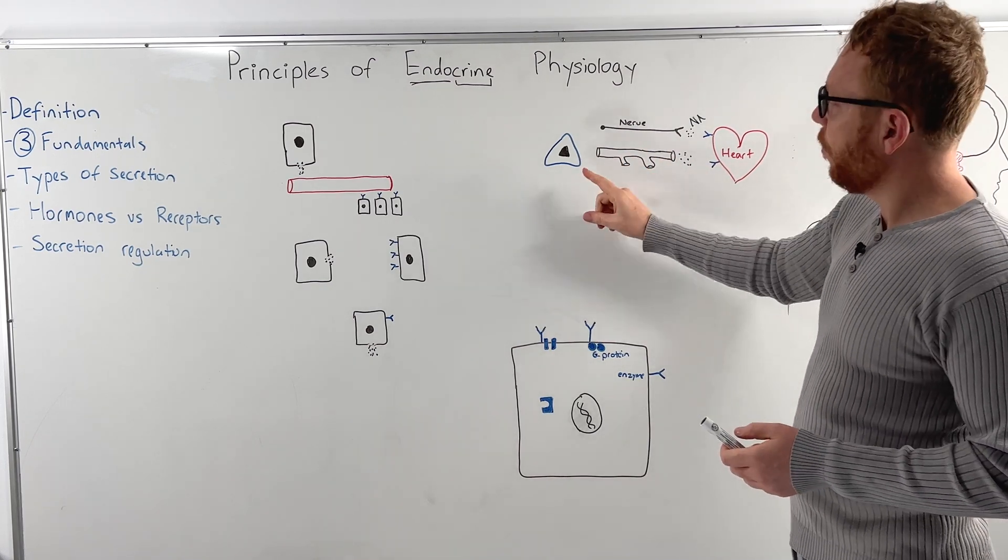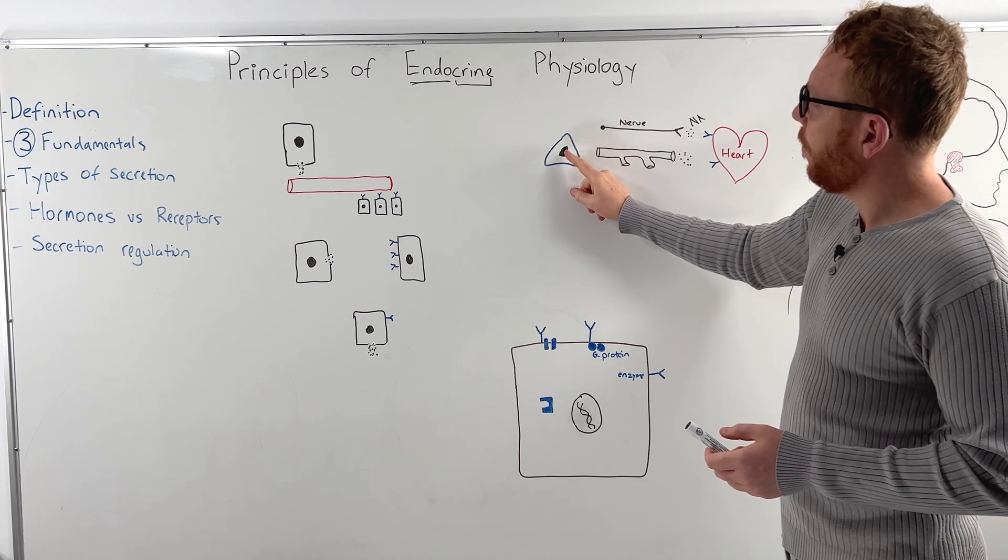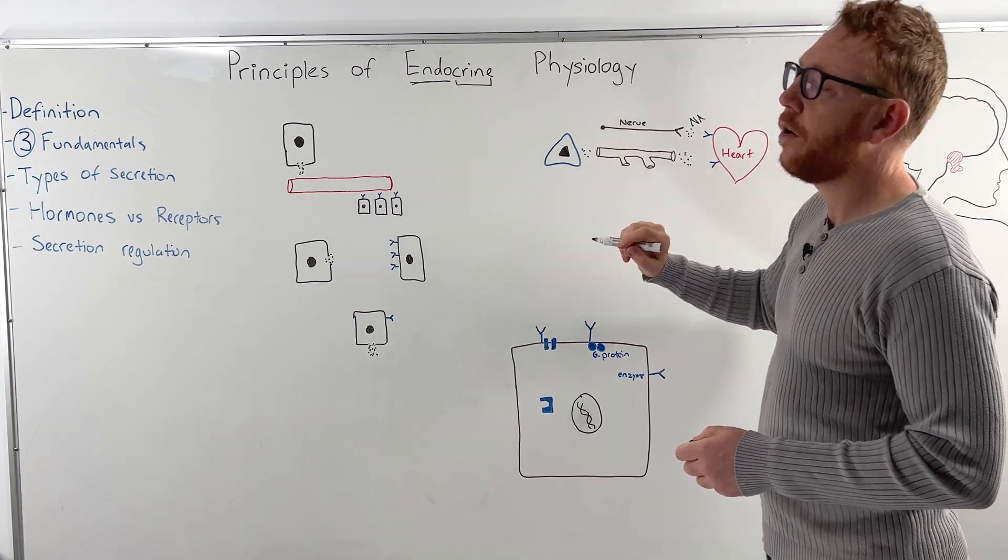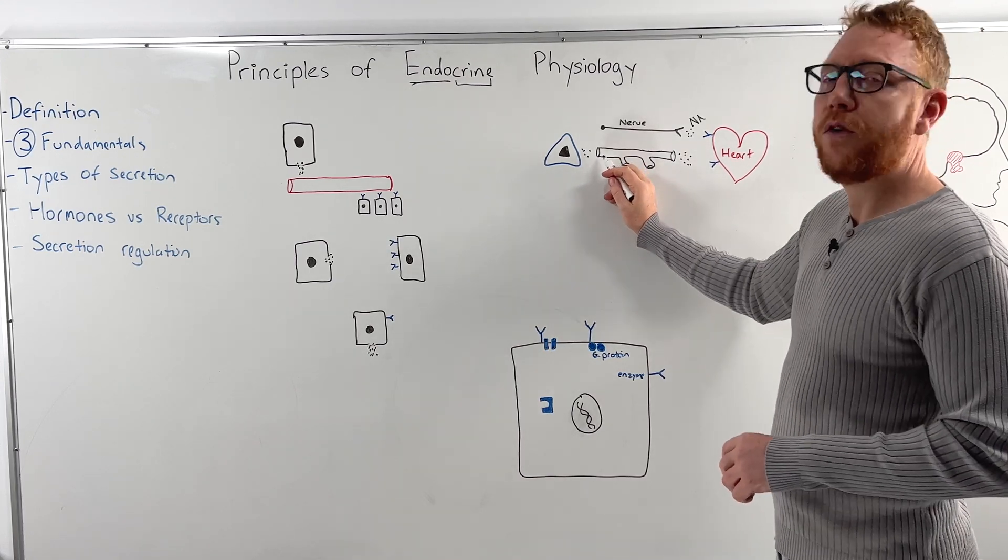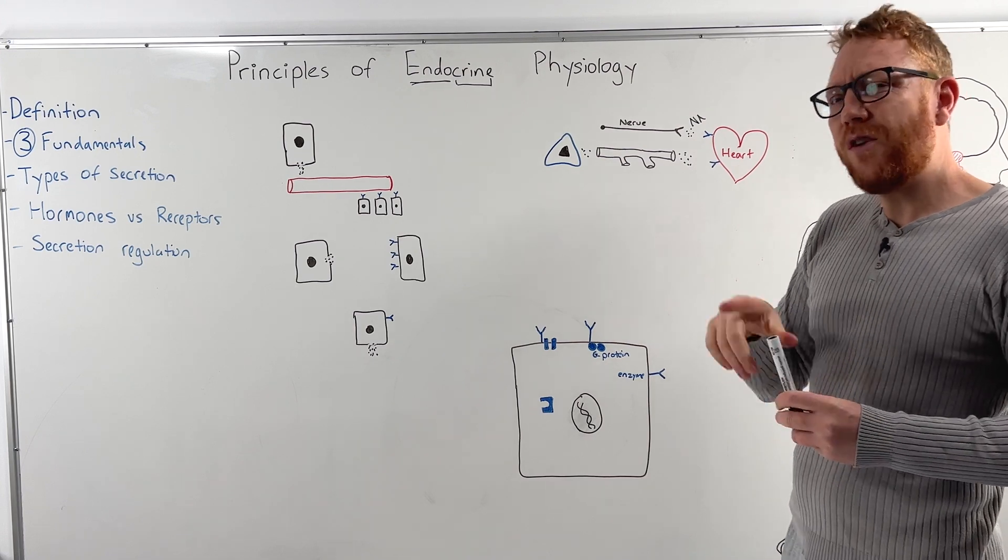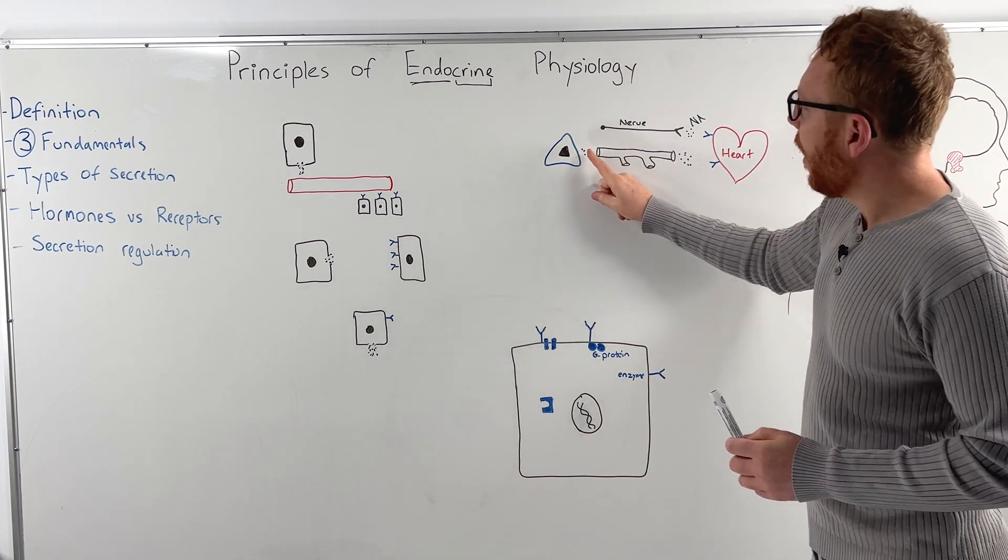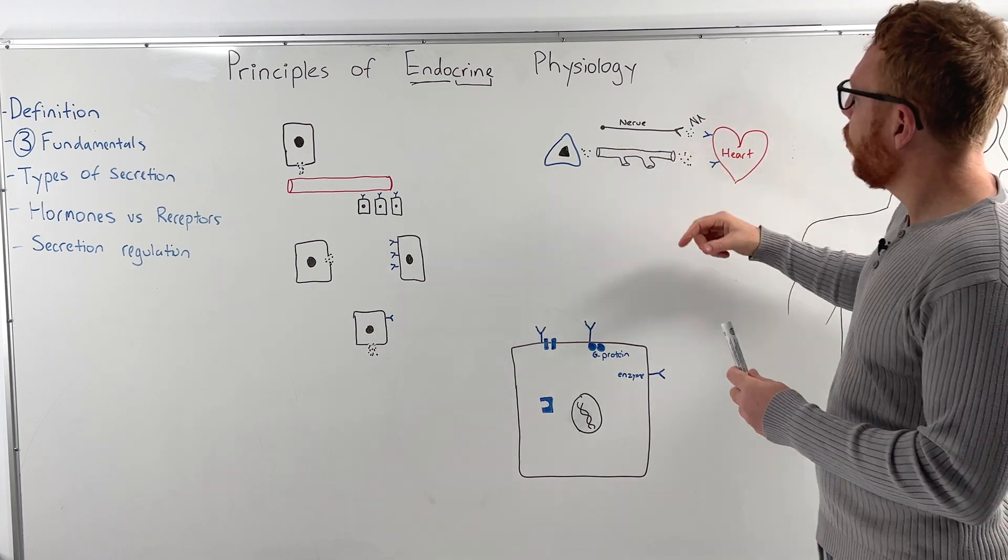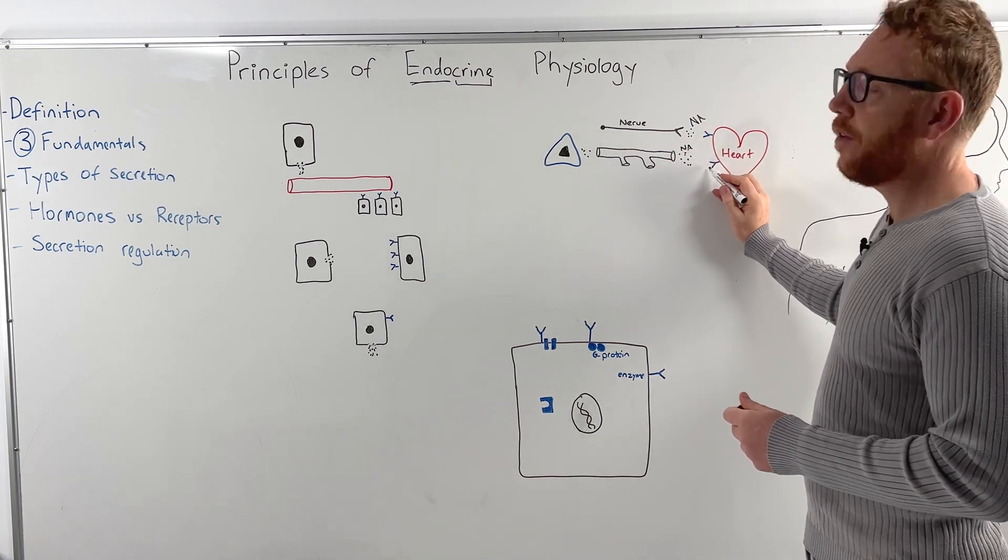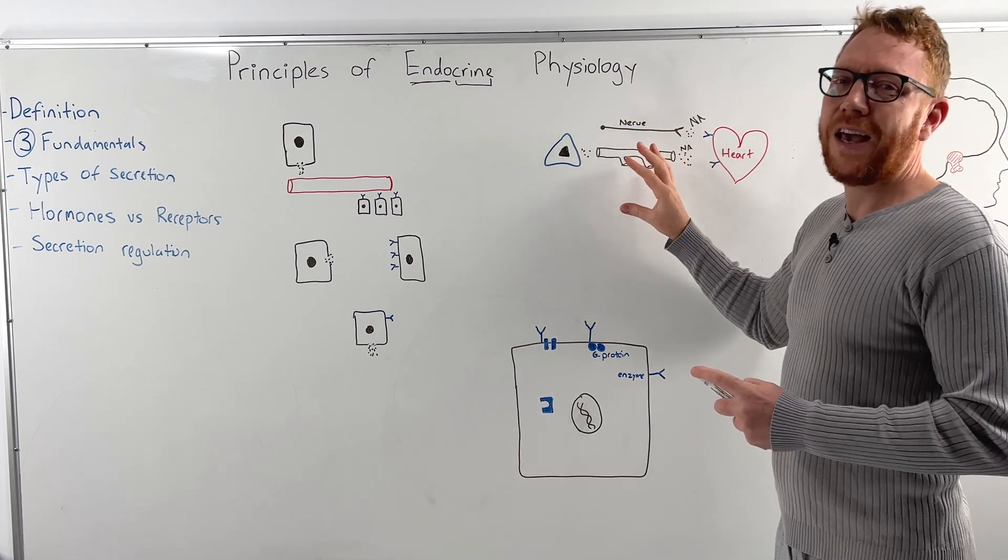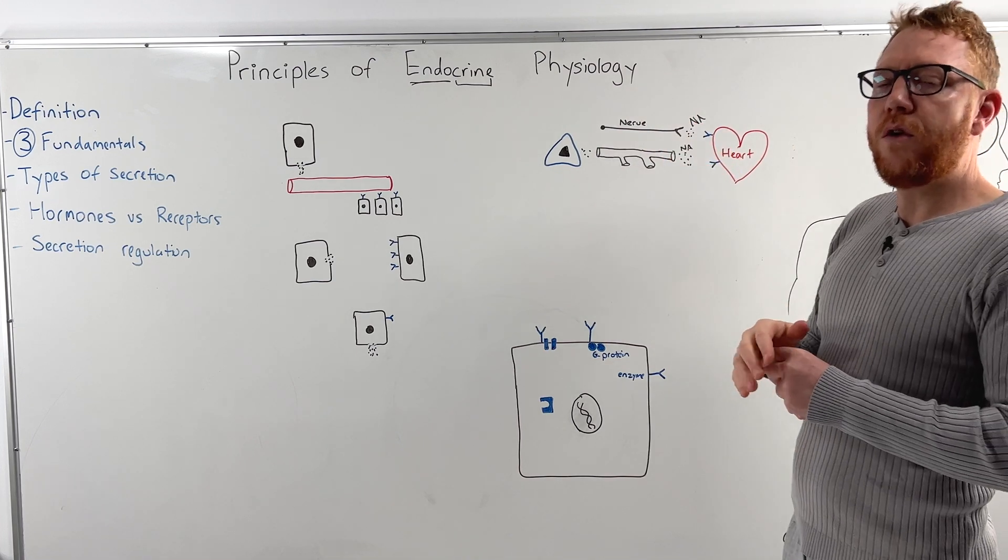But the endocrine system can also do a communication to the heart and many other parts of the body. So a similar example would be the adrenal gland, particularly the adrenal medulla releases a hormone, in this case noradrenaline, and it goes into a blood vessel. Now we know blood vessels go everywhere in the body. So it's not going to be very localized, but it will travel to the heart because blood will go to the heart and this neurotransmitter again noradrenaline combines to the receptor and do the same action.